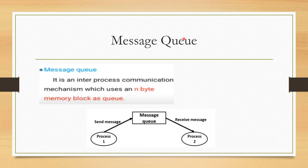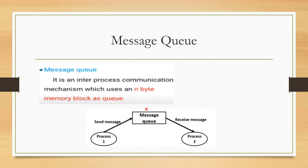Now we will look at the first type of inter-process communication: the message queue. A message queue is an IPC technique which uses an n-byte memory block as a queue. Suppose process 1 wants to send a message to process 2 — it stores all these messages in queue form, and process 2 receives them according to its matching speed. The implementation of sending and receiving methods is dependent upon the operating system kernel.